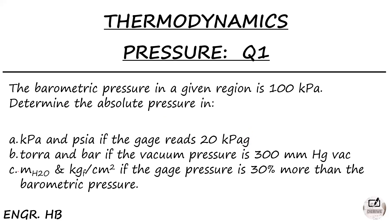Letter B asks for Torr absolute and bar, if the vacuum pressure is 300 mm mercury vacuum. And Letter C asks for meter water and kilogram force per square centimeter, if the gauge pressure is 30% more than the barometric pressure.